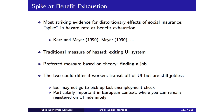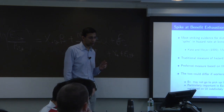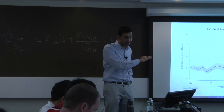Exiting the UI system differs from finding a job because you can go off the system without finding a job—for instance, you might decide not to pick up your last unemployment check or not want to deal with the hassle of the UI system. From a social welfare perspective, what we care about is whether you're actually working again. This is particularly important in the European context, where you can remain registered on the UI system indefinitely in many countries to receive job search assistance, creating a real distinction between being on the UI system and being employed.